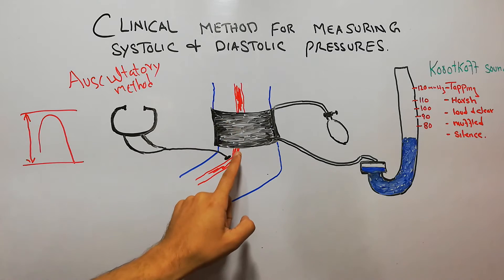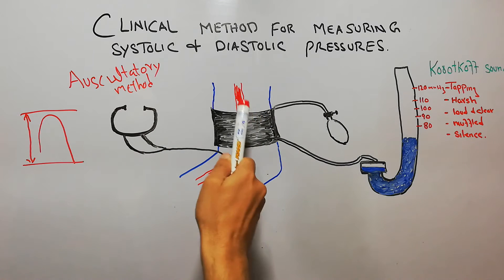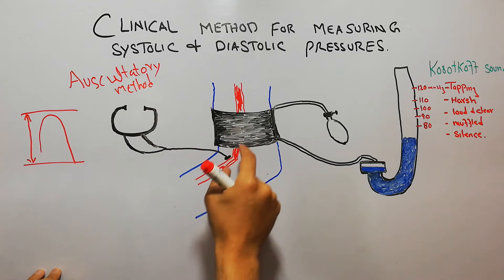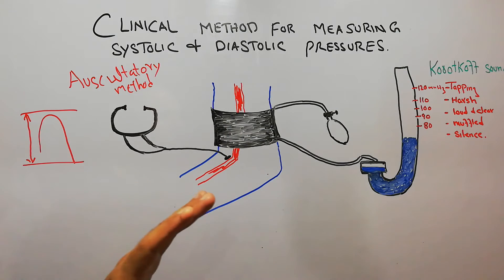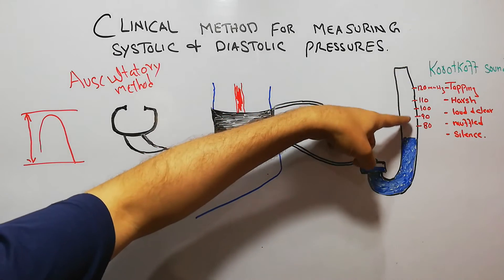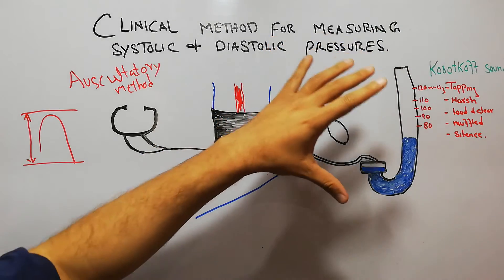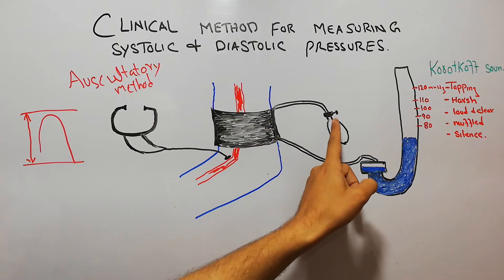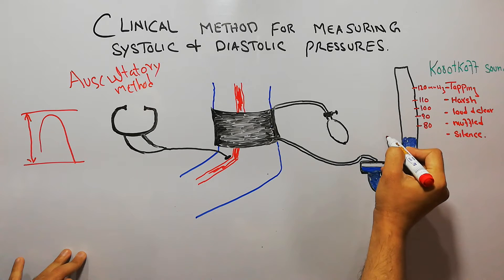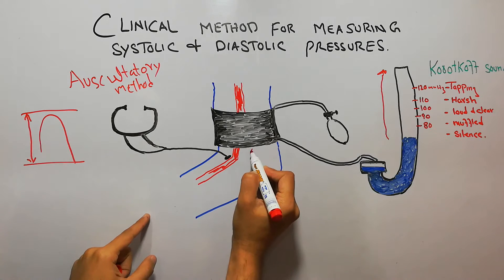As long as the pressure has not been increased, no sounds are heard through the stethoscope. When the pressure in the cuff is increased above 120 mmHg in a normal person, the sounds disappear again. The cuff pressure is raised above 120 mmHg and then slowly the pressure is released with the help of the valve.